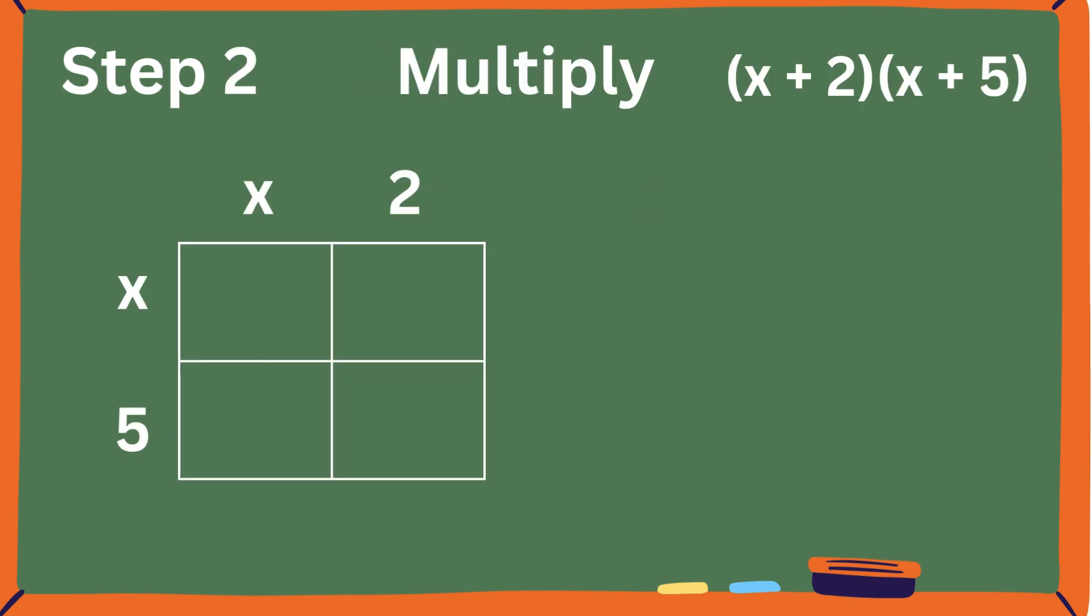Top left, x times x equals x squared. Top right, 2 times x equals 2x. Bottom left, x times 5 equals 5x. Bottom right, 2 times 5 equals 10. Now just add all the boxes together.